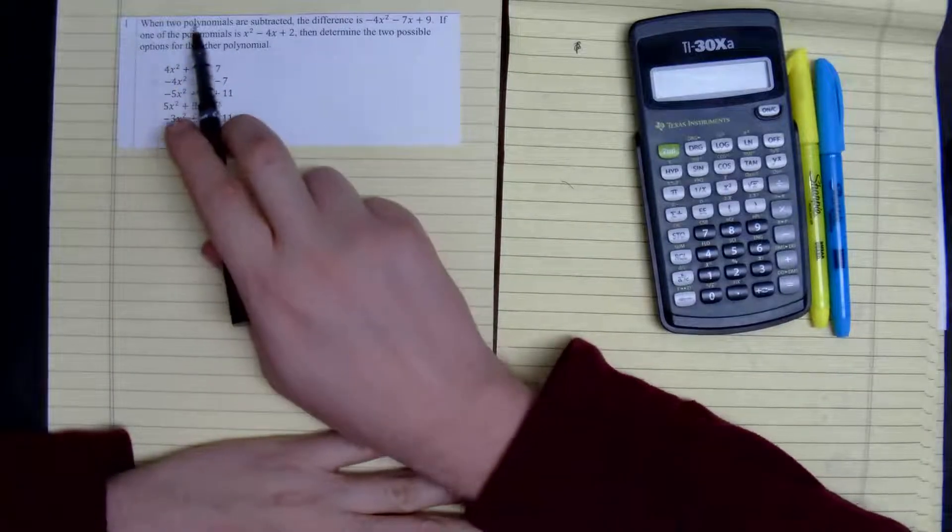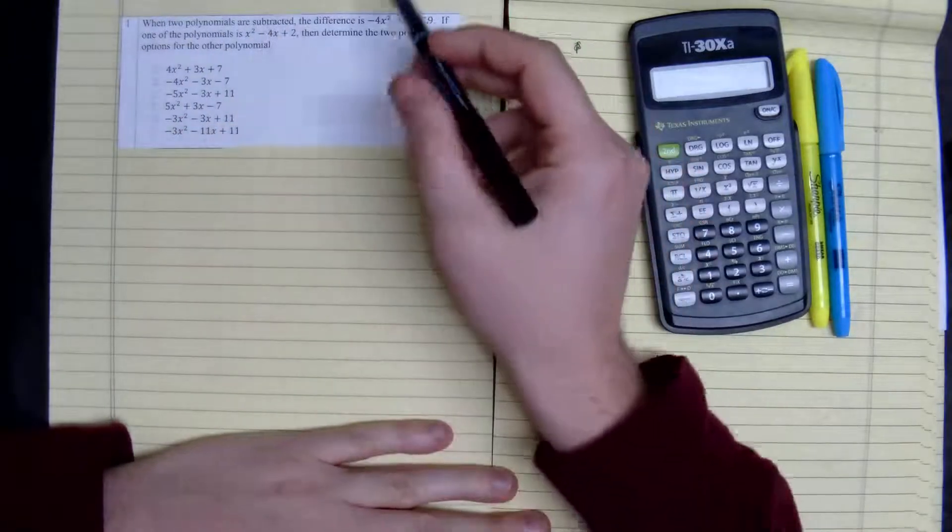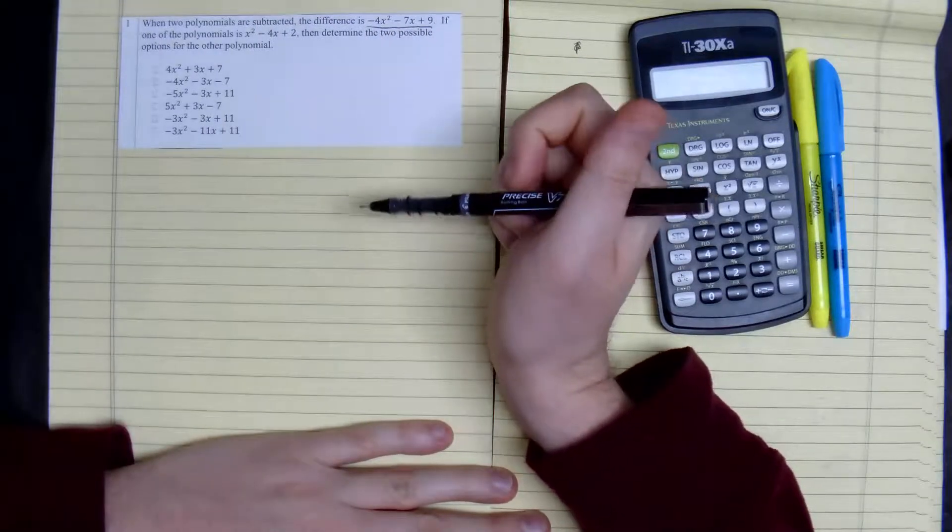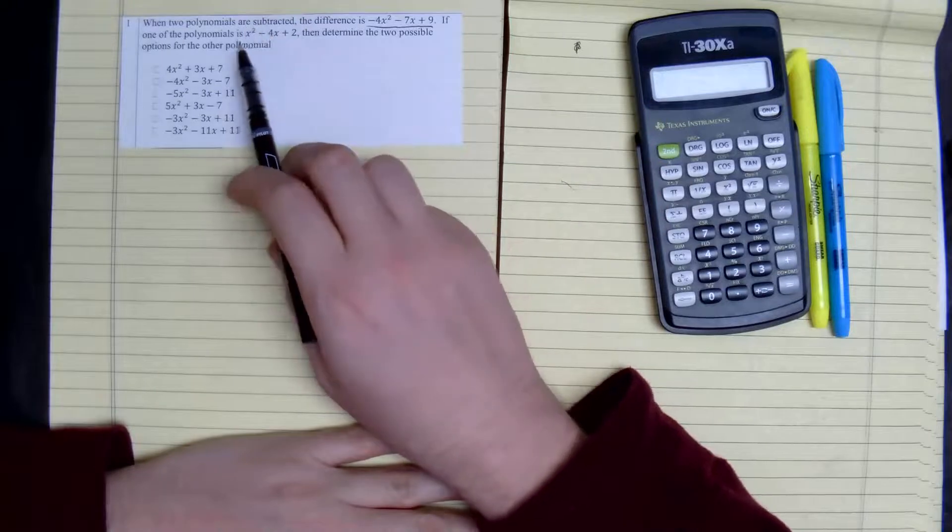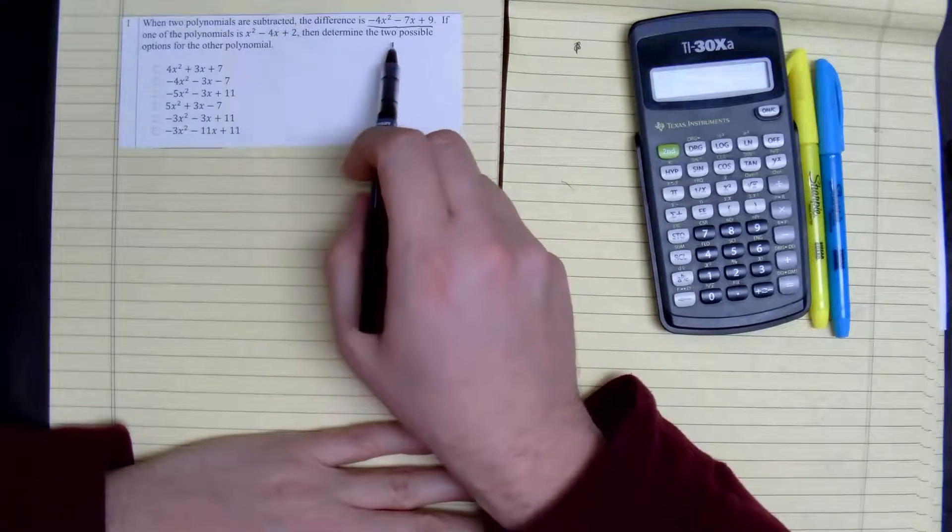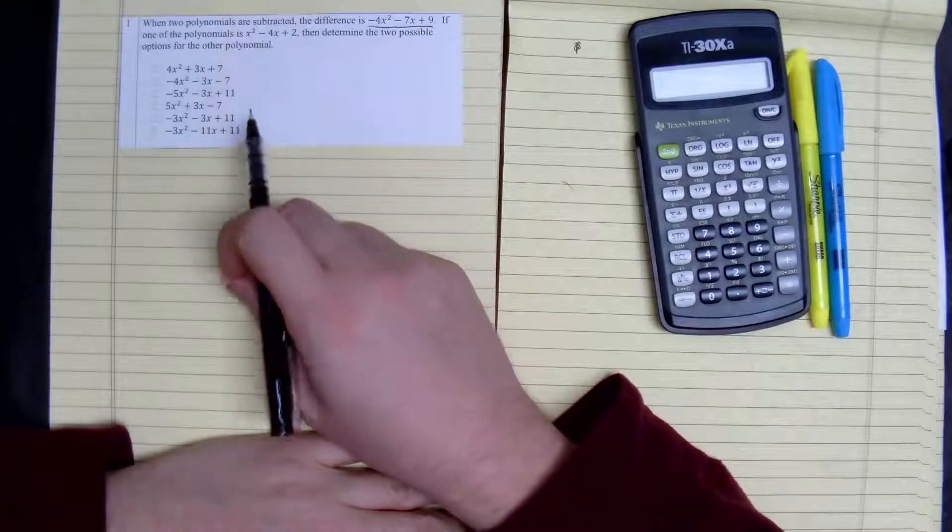We're looking at number one, and it says when two polynomials are subtracted, the difference is negative 4x squared minus 7x plus 9. If one of the polynomials is x squared minus 4x plus 2, then determine the two possible options for the other polynomial.